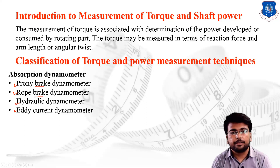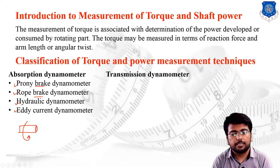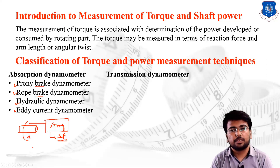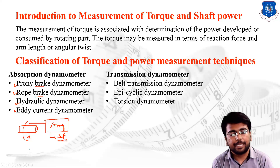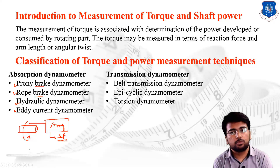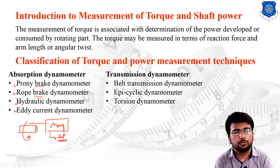The second category is the transmission type dynamometer, in which power generated by the shaft is simply transmitted to another arrangement that measures the shaft power. The dynamometer itself does not absorb the power but transfers it to another mechanical setup. Examples include the belt transmission dynamometer, which uses a belt-pulley arrangement to transfer shaft power from one position to another, and the epicyclic dynamometer, which uses an epicyclic gear train to transmit shaft power.